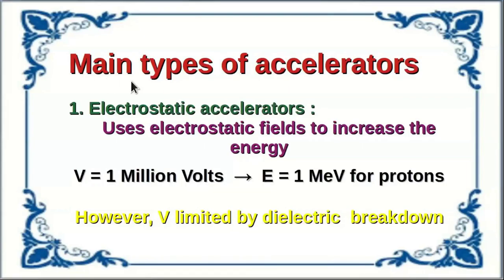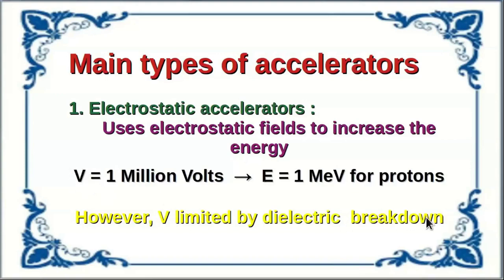The main types of accelerators include, first, the electrostatic accelerator, which uses electrostatic fields to increase energy. As already mentioned, a high voltage of 1 million volts gives protons an energy of 1 MeV. However, the maximum value of the voltage is limited by dielectric breakdown of the medium in which the accelerator is situated.